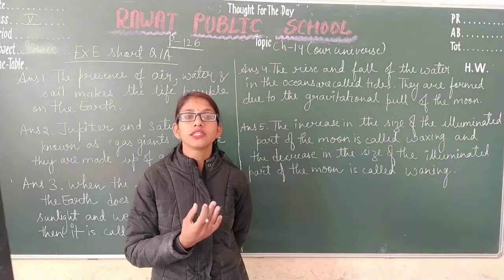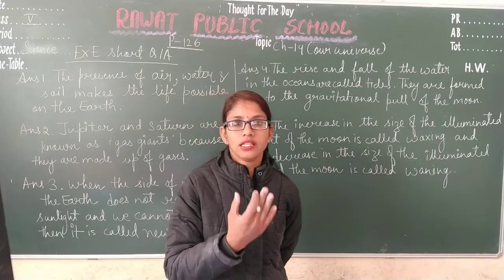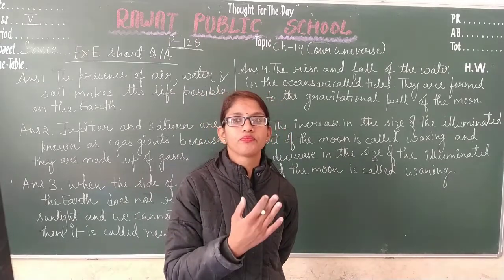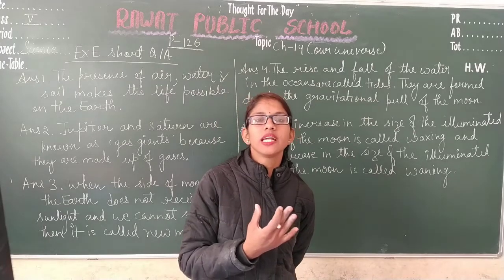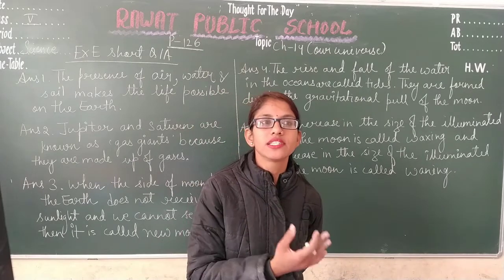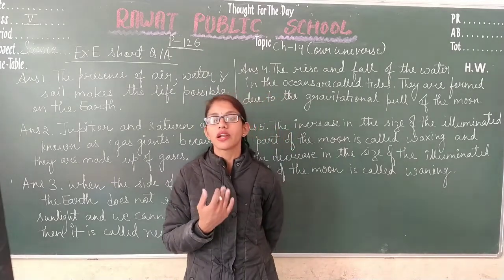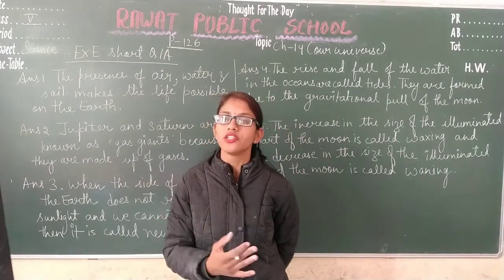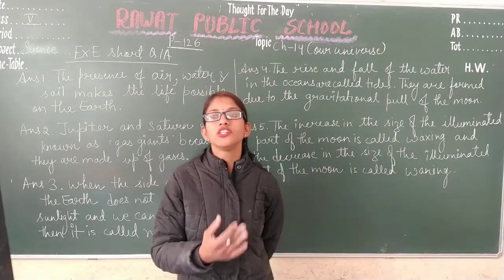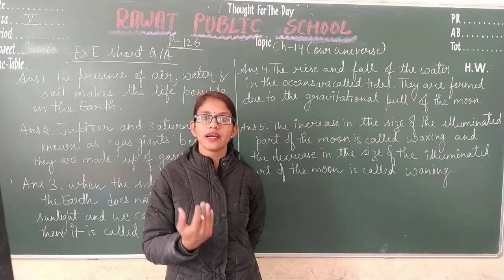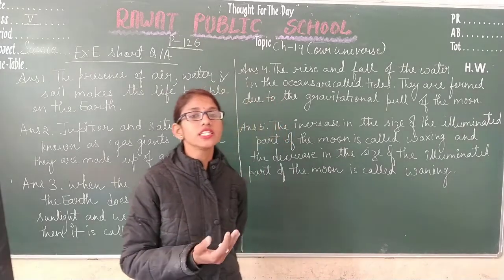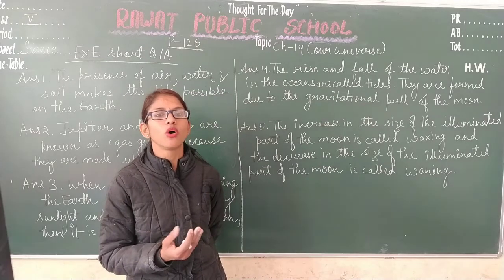The part of the earth that faces the moon experiences a rise in the water of that region, creating a high tide. The region between the two high tides creates a low tide. This is formed due to the gravitational pull of the moon.